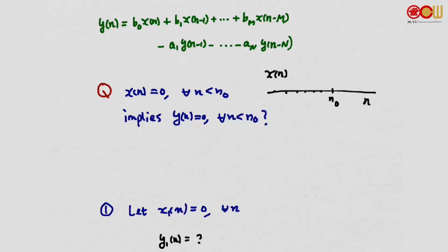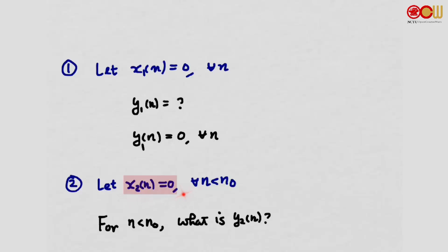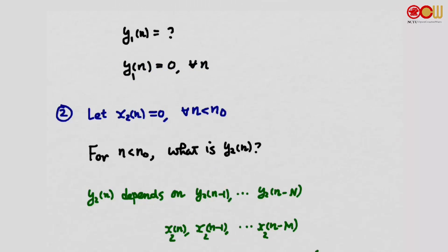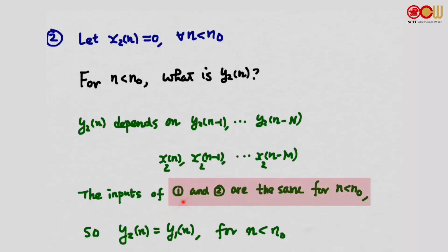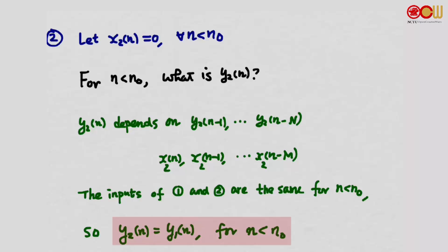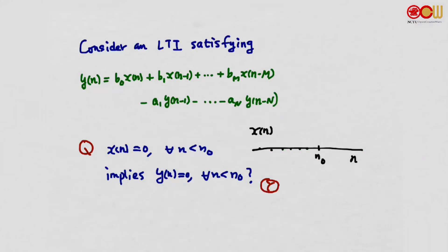For the first case, suppose x1n equals 0 for all n — not just before n0, but always. Then the output should be 0 for all n. For the second case, x2n is 0 before n0. Since the inputs of case 1 and case 2 are identical for all n less than n0, we can expect the outputs to be the same for n less than n0. Therefore, the output y2 should indeed be 0 before n0. So the answer to the question is yes.